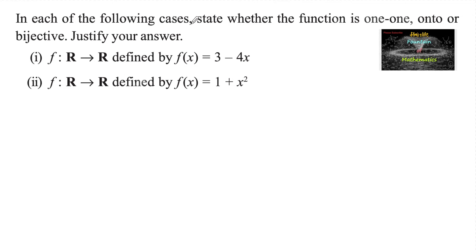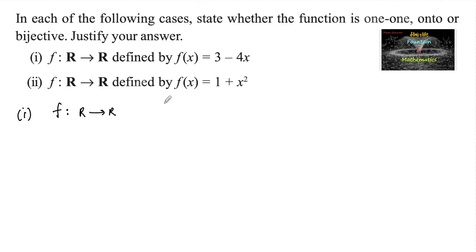In each of the following cases, state whether the function is one-to-one, onto, or bijective, and justify your answer. First: f from ℝ to ℝ defined by f(x) = 3 minus 4x — a function defined from the real numbers to the real numbers.